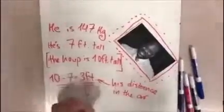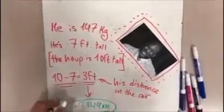He is 147 kilograms and he is 7 feet tall. The hoop that he has to jump to is 10 feet tall, so the distance between him and the hoop, or the distance in the air, is 3 feet. This is the same as 0.9144 meters.